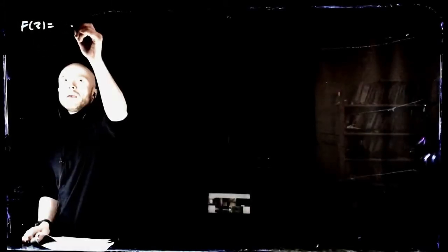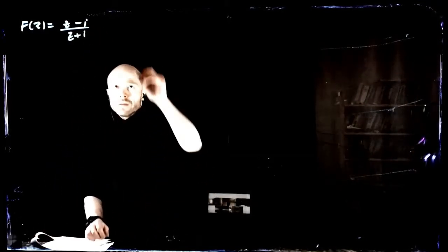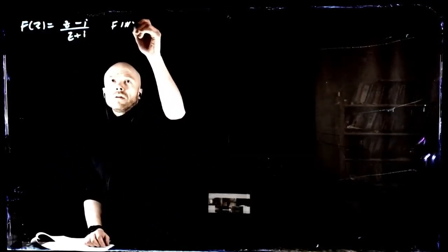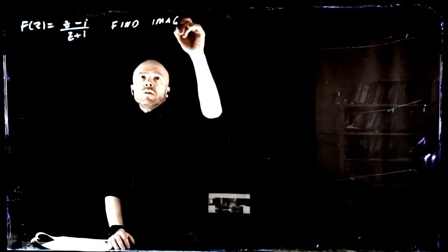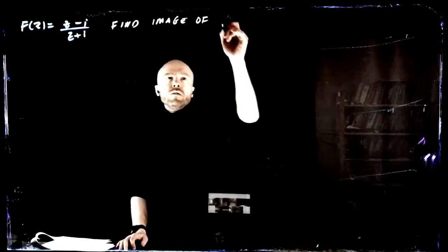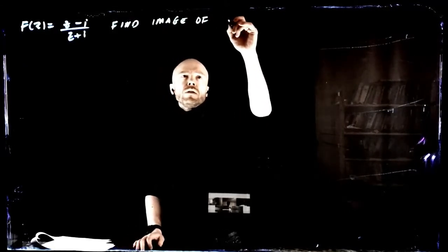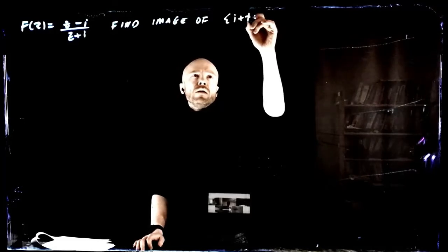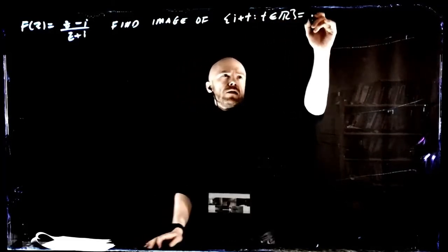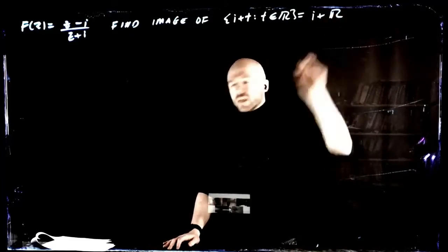f of z is z minus i over z plus i, and we need to find the image of the set i plus t where t is real. I'm going to write that as i plus the real numbers.